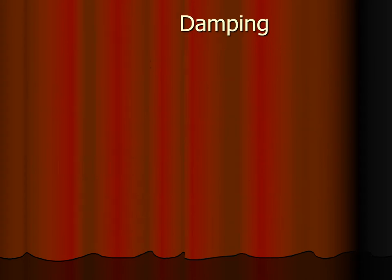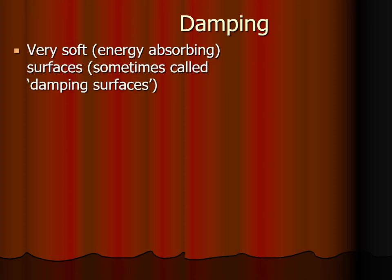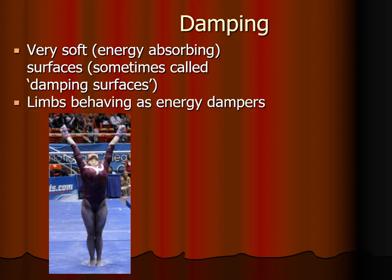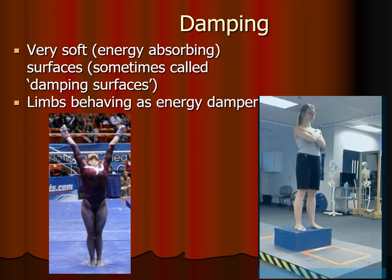A spring stores and returns energy, or recoils. Another thing that can happen is damping — absorbing energy. Surfaces can be damping, like a gymnastics mat, which is one of the reasons it's so hard to stick the landing. But also the limbs can behave as energy dampers. As you see in this video, the woman is jumping, but instead of using her legs like a spring, she just absorbs all the energy with her legs, so her lower body is behaving as an energy damper.